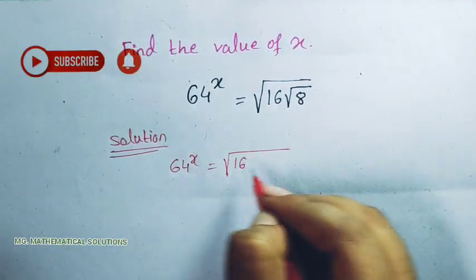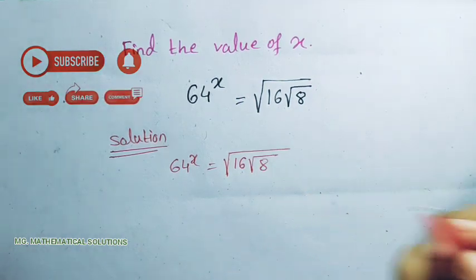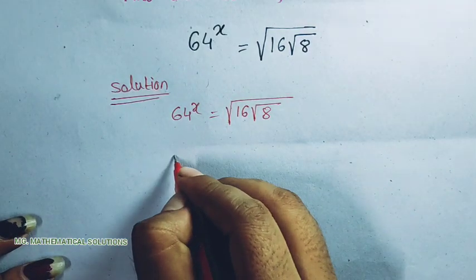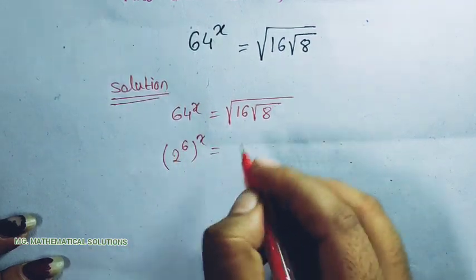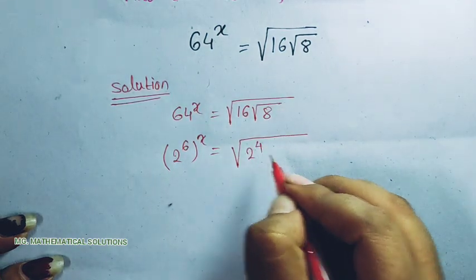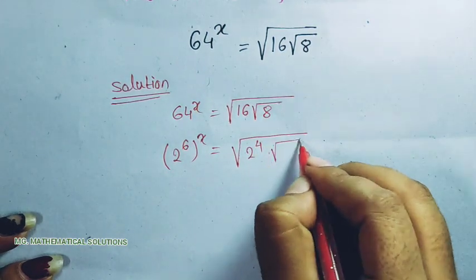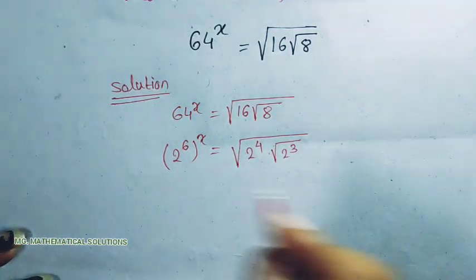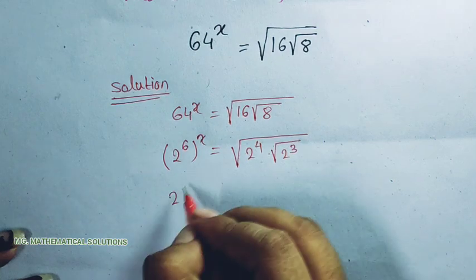64 we can write as 2 to the power 6, whole to the power x, equal to root of 16 — we can write 16 as 2 to the power 4 — times root of 8, which we can write as 2 cubed.